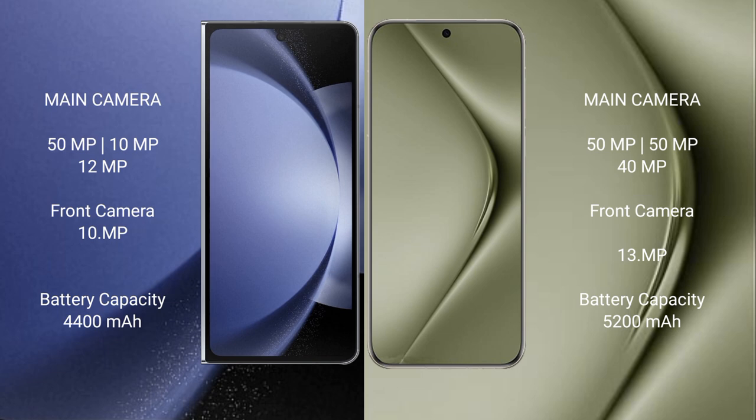Samsung Galaxy Z Fold 6 rear camera: triple camera setup — 50MP plus 10MP plus 12MP; front camera: 10MP. Huawei Pura 70 Ultra rear camera: triple camera setup — 50MP plus 50MP plus 40MP; front camera: 13MP.